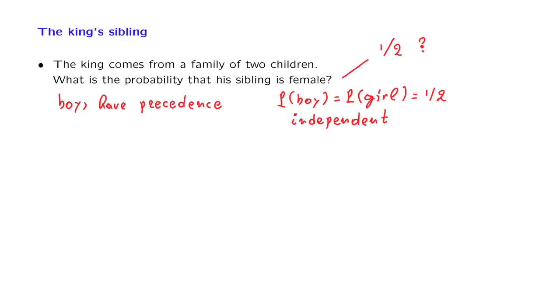We have to make a more precise model. So let's go ahead with it. We have two children, so there are four possible outcomes: boy-boy, boy-girl, girl-boy, and girl-girl.